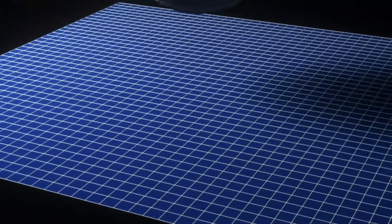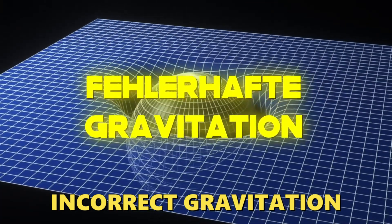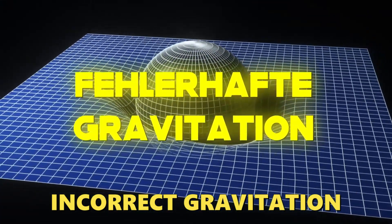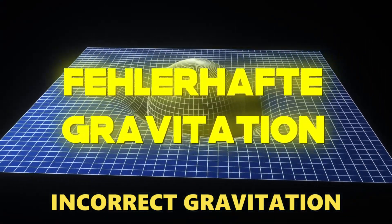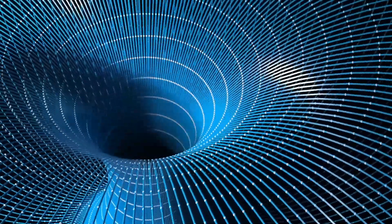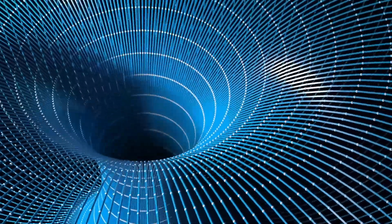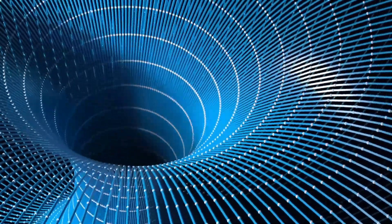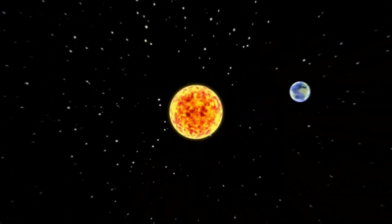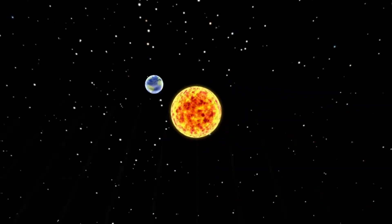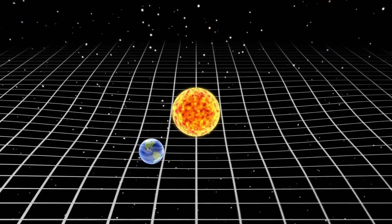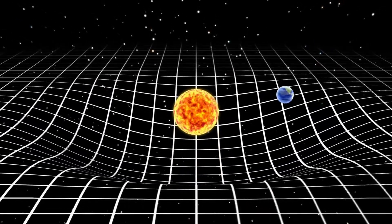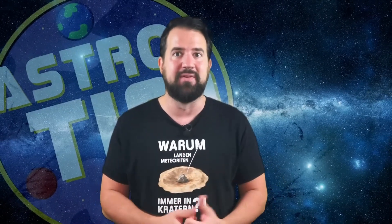Second, our idea of gravity may be wrong. More and more astrophysicists think that our current understanding of gravity may not be sufficient to describe the motions of galaxies on large scales. A modification of general relativity or the existence of previously unknown gravitational interactions could explain the different measurements of the Hubble constant — but that would of course be a massive scientific revolution.